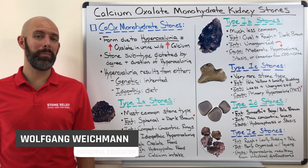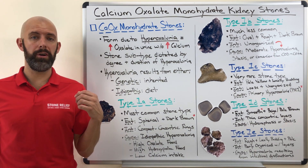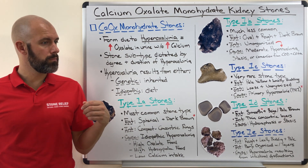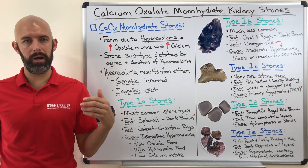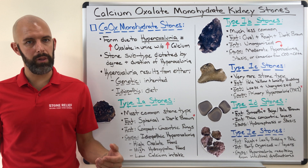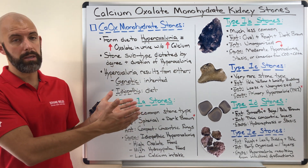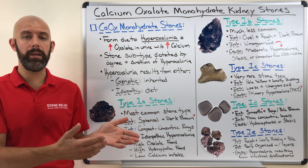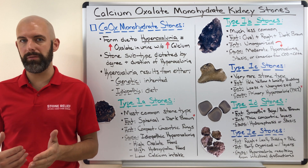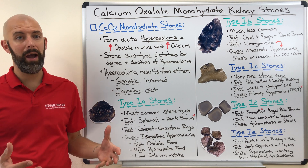Hey everyone, today we're going to talk about calcium oxalate stones. In particular, we are going to talk about the monohydrate type of the stone. Calcium oxalate stones are the most common type of kidney stone here in the United States, but what people don't realize is that there are actually two different types of stones. Today we're going to talk about the monohydrate variety, and in another video we're going to dissect the dihydrate version of that. So let's dive in and discuss the monohydrate stone.